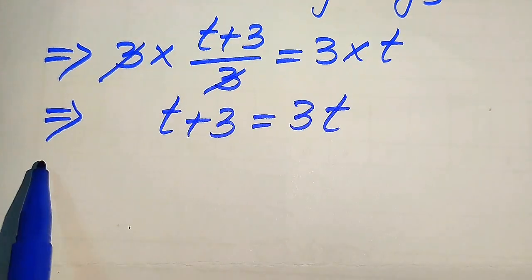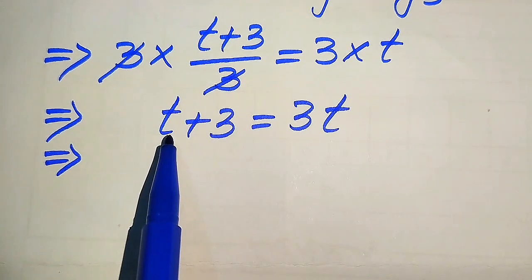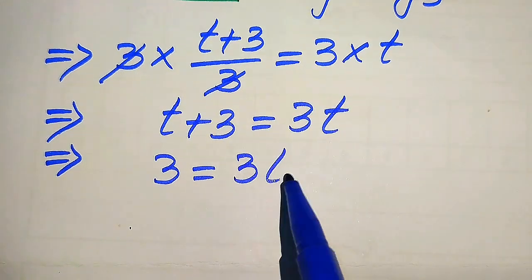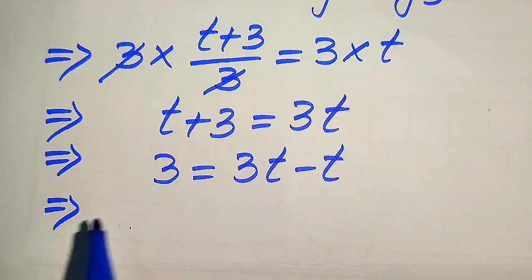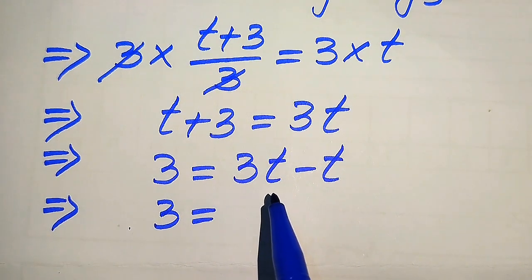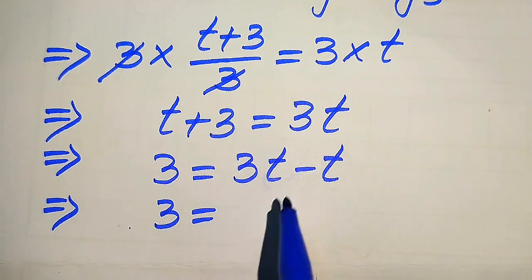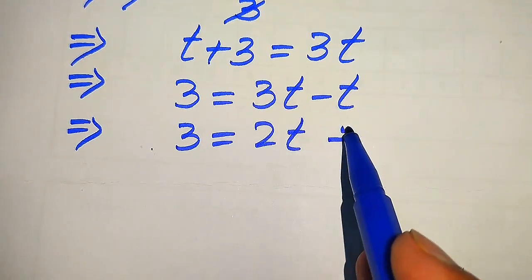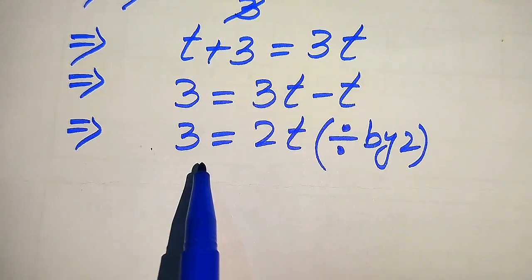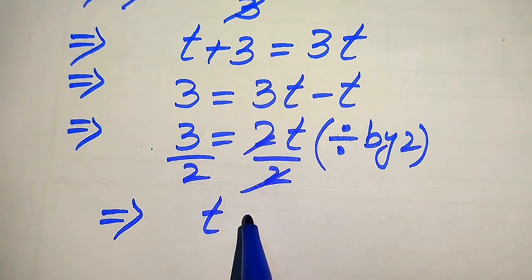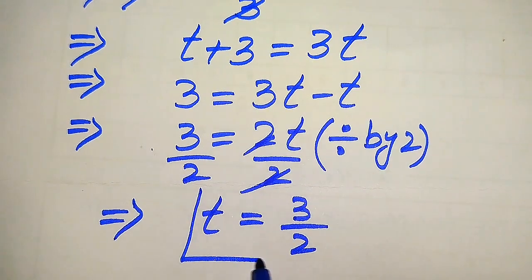Now we move the variable term t to the right-hand side, giving us 3 equals 3t minus t. Subtracting the coefficients, 3 minus 1 gives 2t, so 3 equals 2t. To solve for t, we divide both sides by 2 — the 2s cancel — and we get t equals 3 over 2.